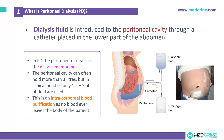The peritoneal cavity can normally hold more than three liters, but in clinical practice we only use 1.5 liters to 2.5 liters in peritoneal dialysis. Peritoneal dialysis is a type of intracorporeal blood purification where there is no blood ever leaving the body of the patient.